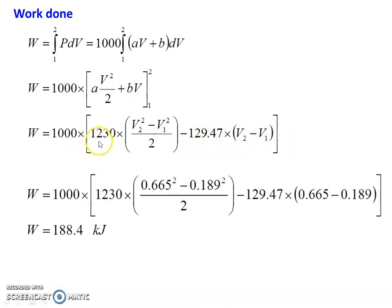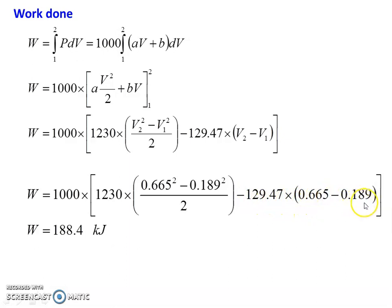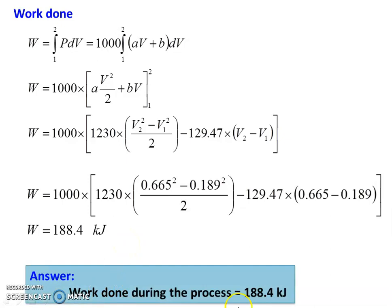Substituting V2 equal to 0.665 and V1 equal to 0.189: 1000 into 1230 into (0.665² minus 0.189²) divided by 2 minus 129.47 into (0.665 minus 0.189). Calculating the answer: W equal to 188.4 kilojoules. The work done during the process is 188.4 kilojoules.